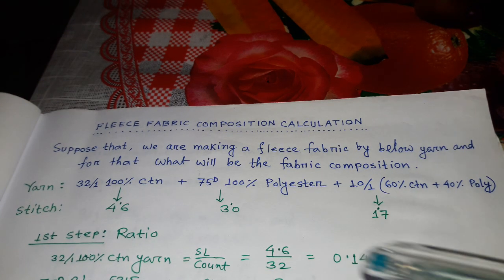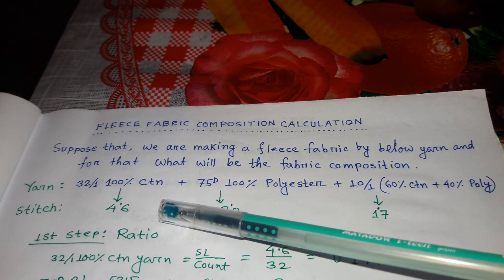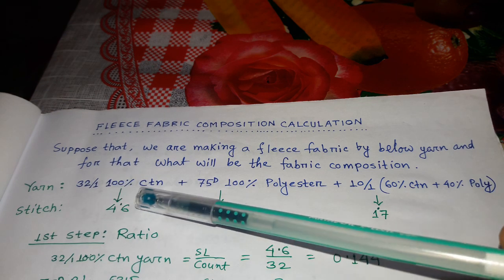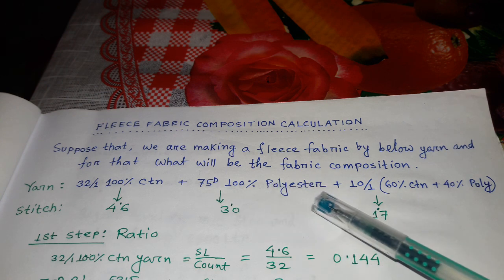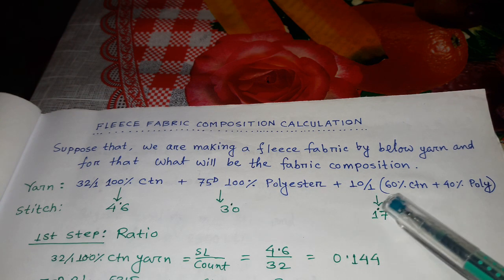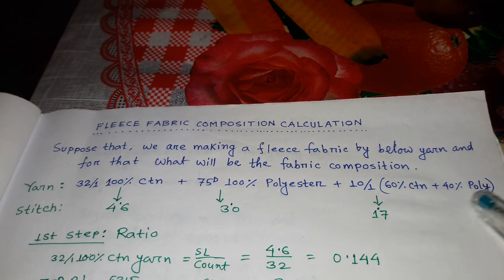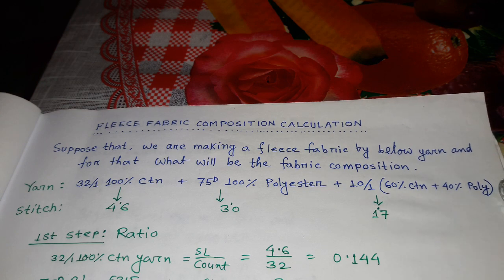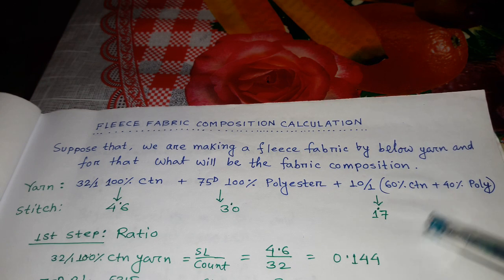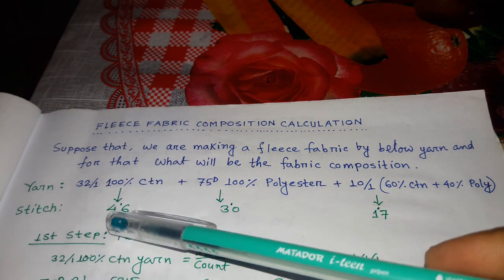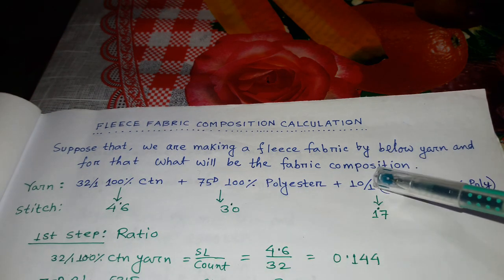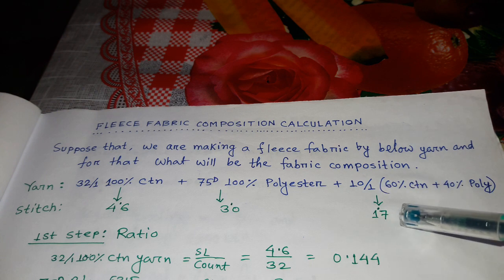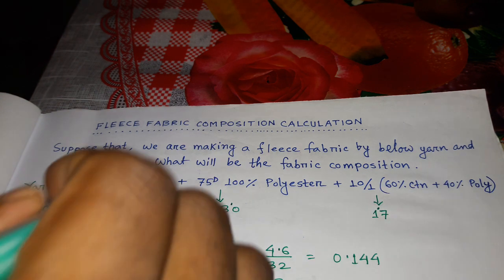The yarn specifications are: 32 single 100% cotton yarn, 75 denier 100% polyester yarn, and 10 single CVC 60/40 yarn. The stitch lengths are: 4.6 for the face yarn, 3.0 for binding, and 1.7 millimeter for the loop yarn.